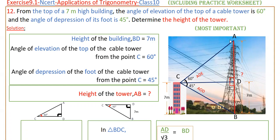The angle of elevation from C to A is 60 degrees, and the angle of depression of the foot of the tower is 45 degrees. The foot of the tower is at point B, so from point C to B, this is the angle of depression.